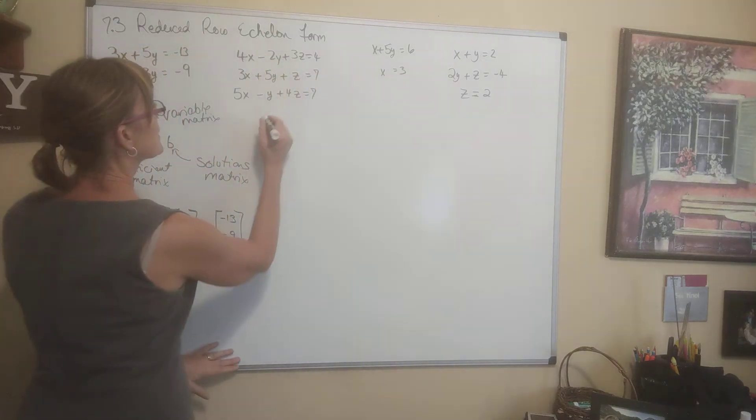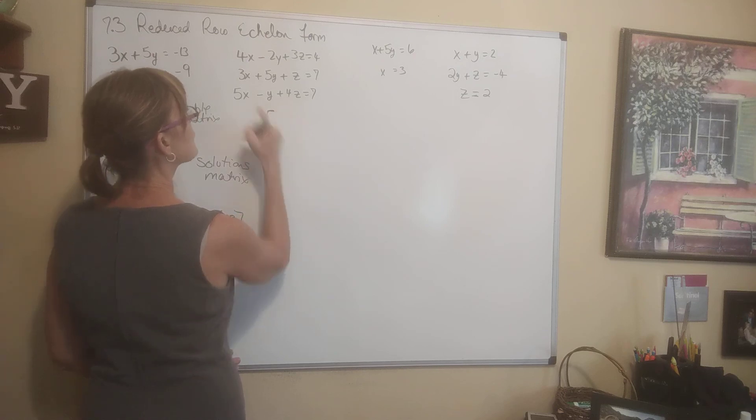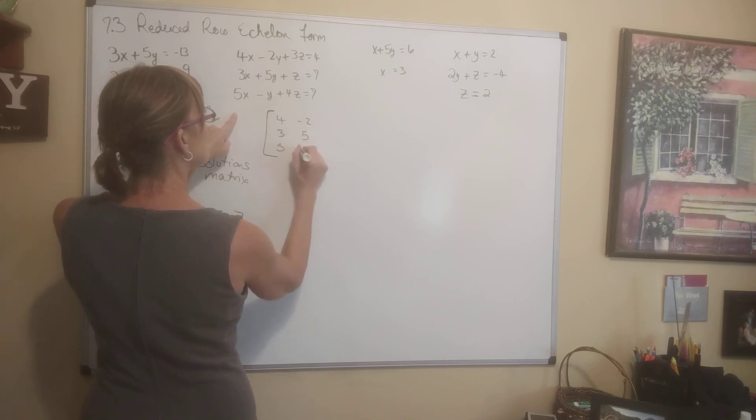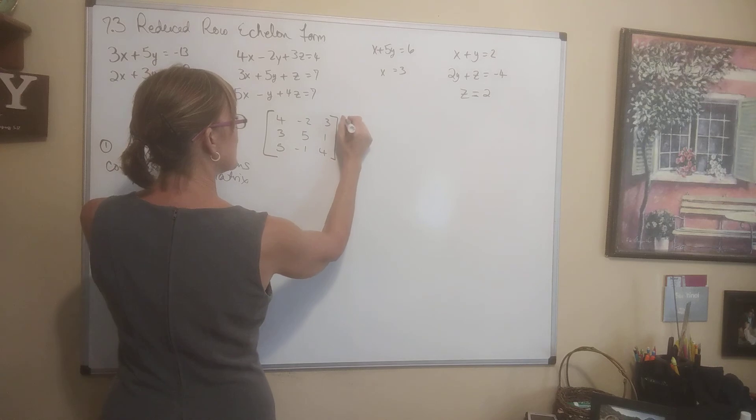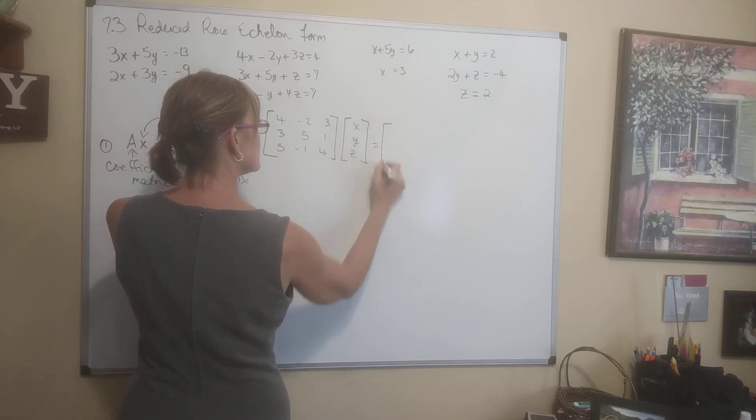Let's go through and convert each of these. Okay, so the second one goes like this. The matrix equation for this one will be 4, 3, 5, negative 2, 5, negative 1, 3, 1, 4. Coefficient matrix, variable matrix, X, Y, Z, is equal to the solutions matrix, 4, 7, 7. That's that one.